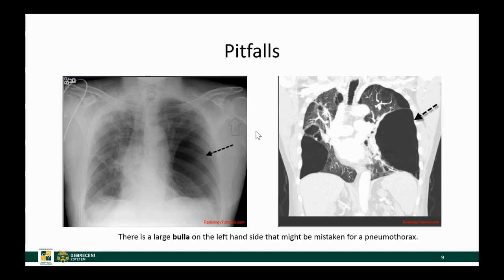Emphysema might also be problematic because if patients have large bullae, we will see a white line and beyond that white line we won't see normal lung markings. However, these white lines are not convex towards the lateral side of the chest — they are more convex towards the middle of the patient. So this is not a pneumothorax. This was caused by a large bulla, and the chest CT shows numerous other bullae within the lung.